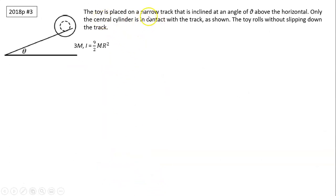Now the toy is placed on the narrow track that is inclined at angle theta above the horizontal. Only the central cylinder is in contact with the track as shown. The toy rolls without slipping down the track. Let's see, what do we know about this toy? We know the toy has total mass is 3M. The toy rolls on here, just on the inner cylinder. The rotational inertia is 9 over 2MR squared.